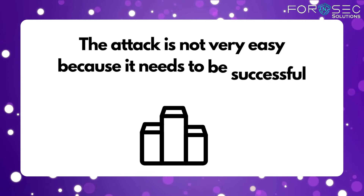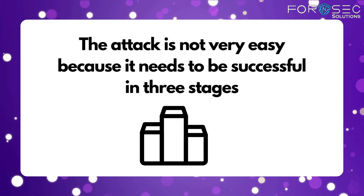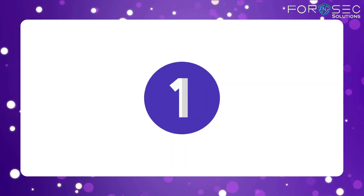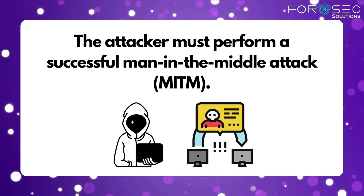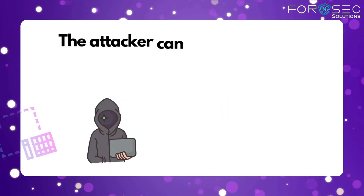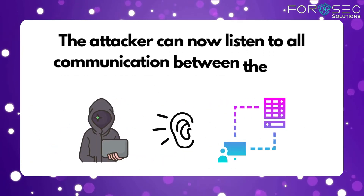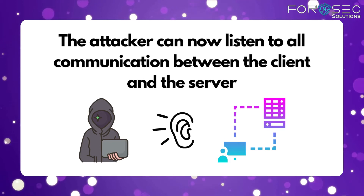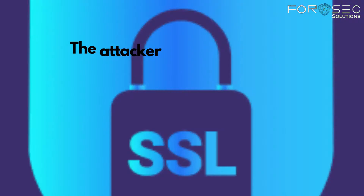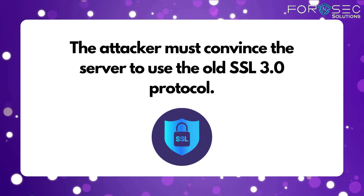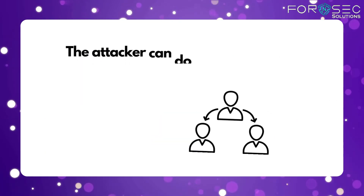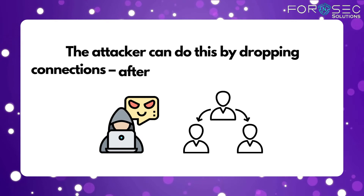The attack is not very easy because it needs to be successful in three stages. The first is the attacker must perform a successful man-in-the-middle attack, and can then listen to all the communication between the client and the server. The attacker must also convince the server to use the old SSL 3.0 protocol. The attacker can do this by dropping connections.